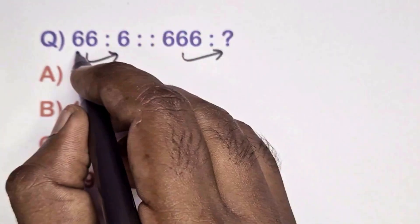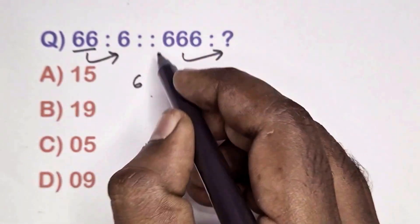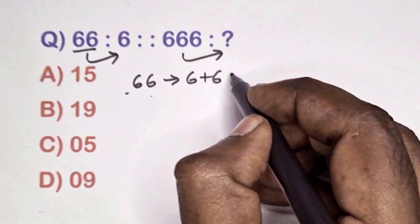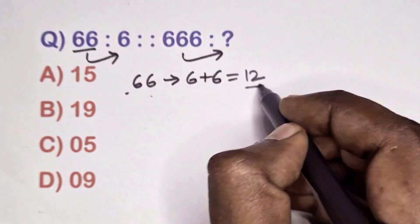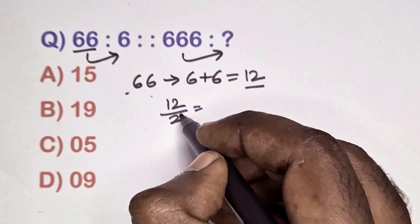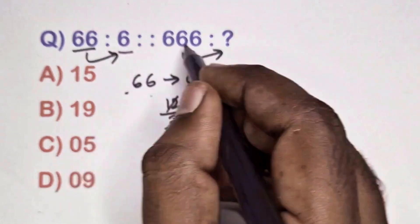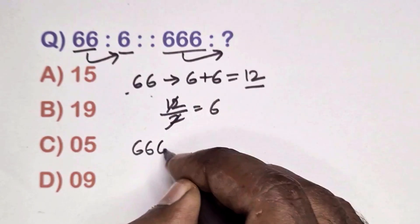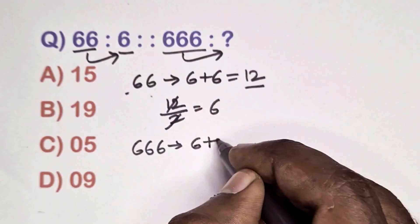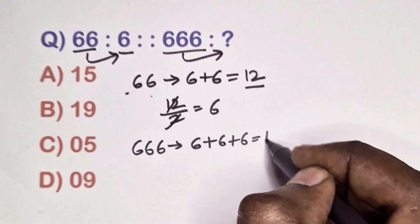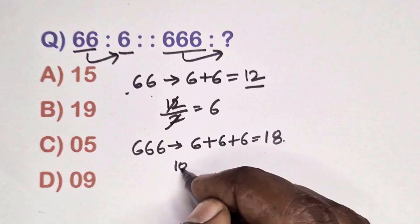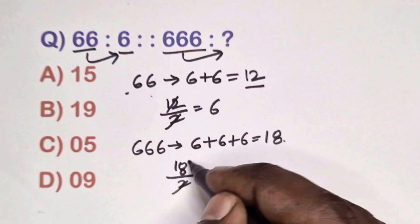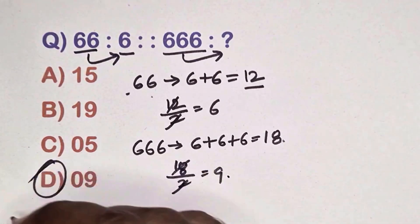Find the relation between this pair. Take 66 — add individual digits: 6 plus 6 is 12, then 12 divided by 2 equals 6. Take 66 again: 6 plus 6 plus 6 plus 6 equals 18, then 18 divided by 2 gives 9. That is option D.